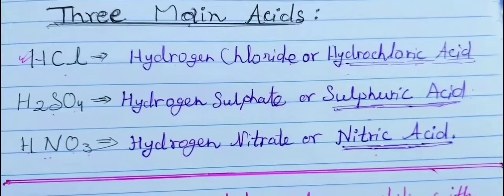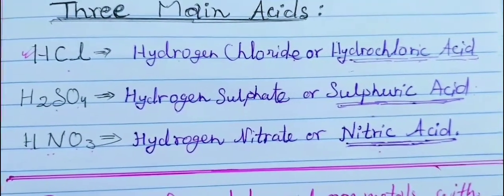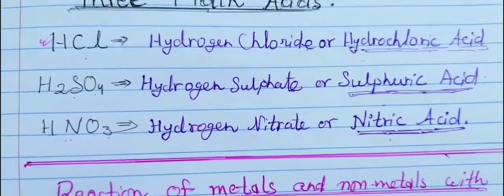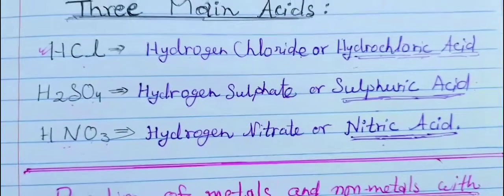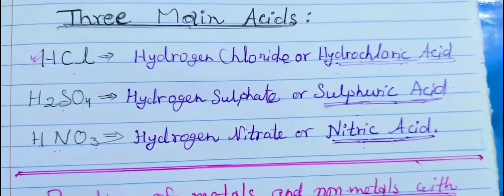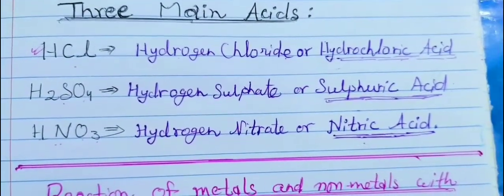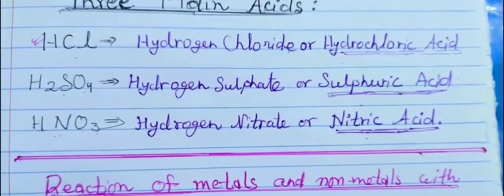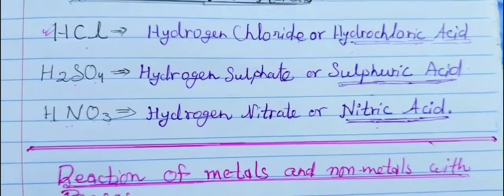Here are the three main acids we know in nature. The first one is HCl, also known as hydrogen chloride or hydrochloric acid.